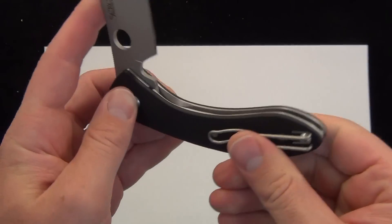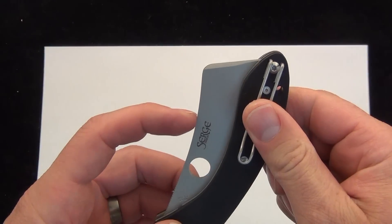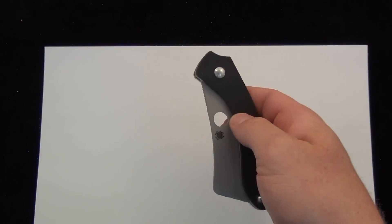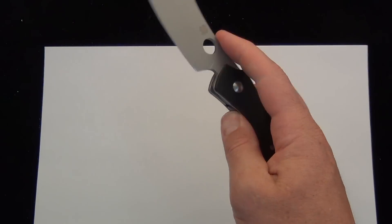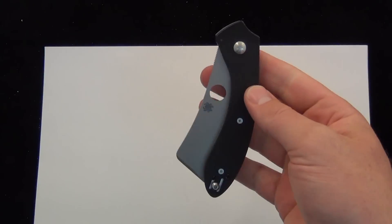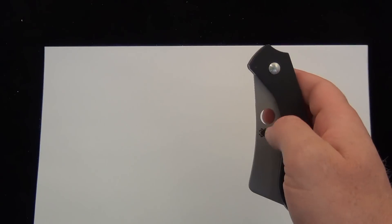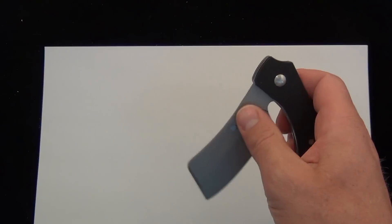So with the walker liner lock, there's the detent. Opens really nicely and really smooth. I think just the way the handle sits in your hand and where the thumb hole is, it just opens really smooth.